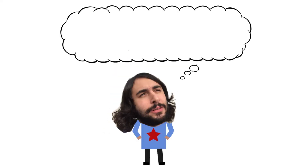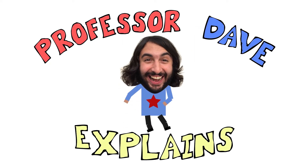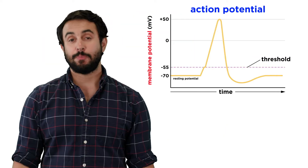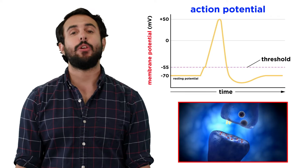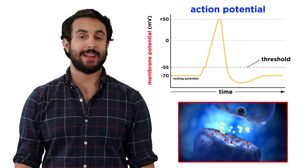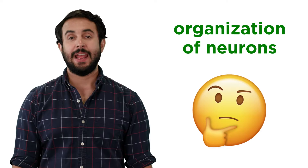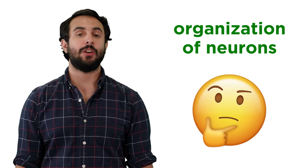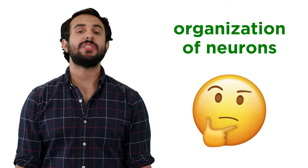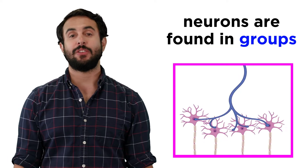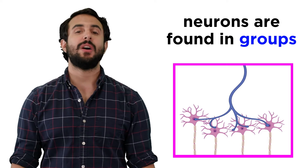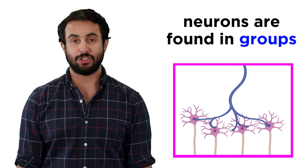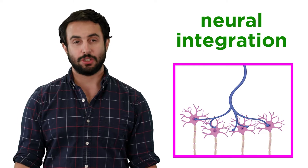Professor Dave here, let's check out some neurons. We now have a pretty solid understanding of how an action potential is generated, and how this propagates from one neuron across a synapse to the next. So let's zoom out a little bit and start to get a sense of the manner in which neurons are organized. This is important to understand because neurons are found in groups, and these groups contribute to larger structures still, so we must understand the hierarchy of this organization, which we can also call neural integration.